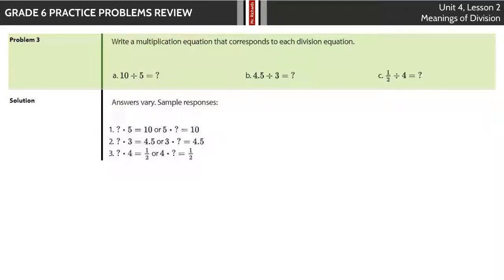Now, write a multiplication equation that corresponds to each division equation. 10 divided by 5 equals what? Well, I know that I can take that what and multiply by 5 and get 10 because that what is 2, right? And then I could also do 5 times the what, and that still equals 10. And that was right here in our solution 1.